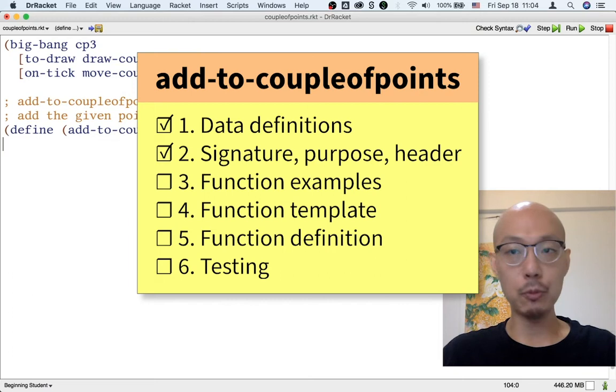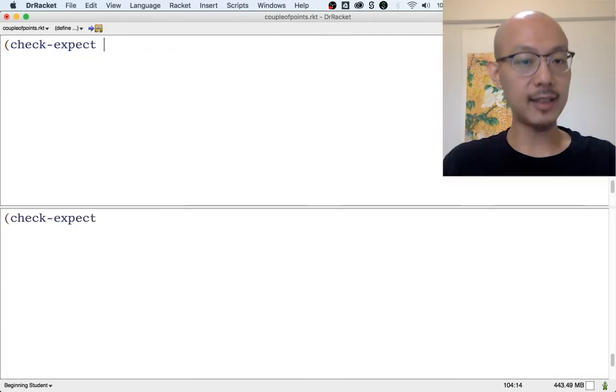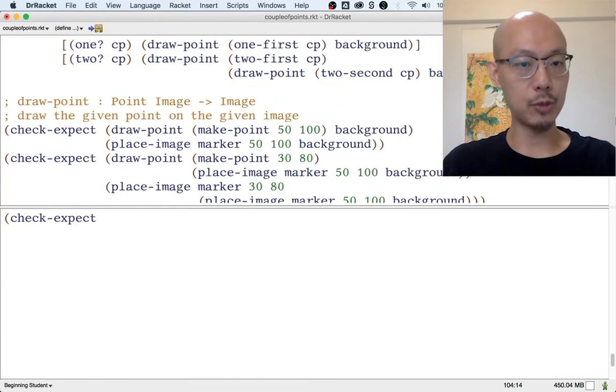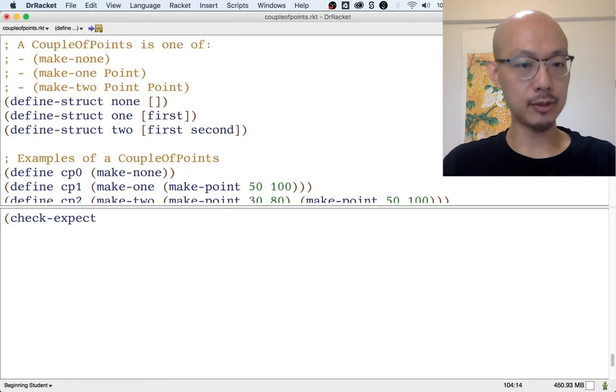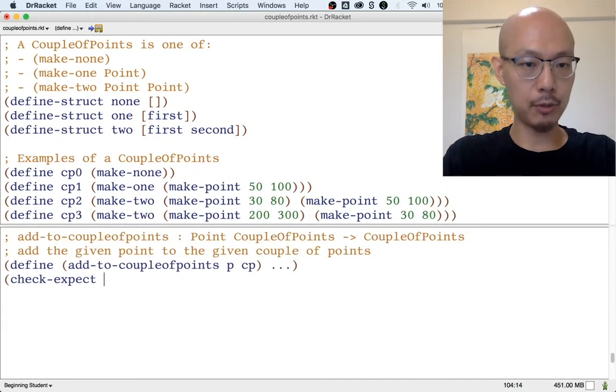Now it's really important that we write some examples for this function. We can use the data examples for a couple of points we wrote before as examples that could be inputs to addToCoupleOfPoints.